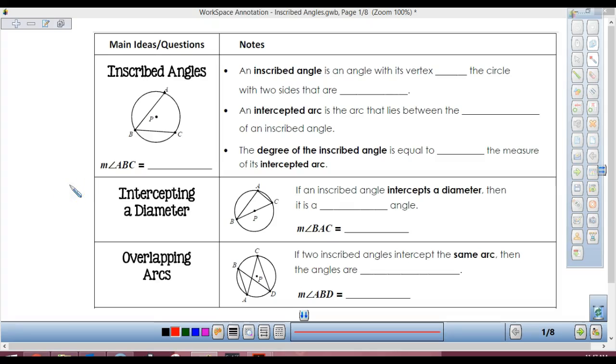Alright, inscribed angles. So we've done central angles, right? And when we did central angles, the vertex was where? In the center of the circle. That's why it's called central.